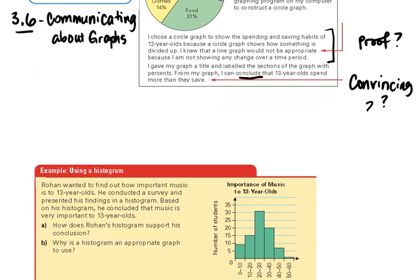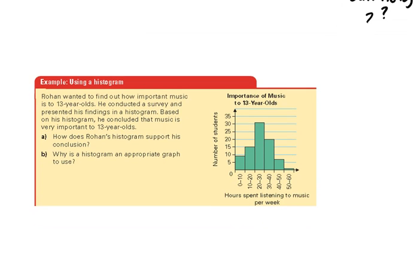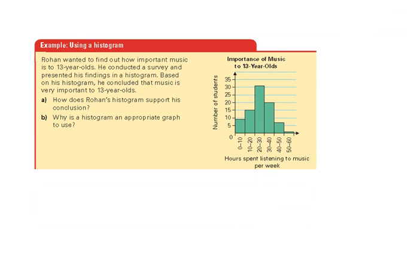In the second example, Rohan wants to find out how important music is to 13-year-olds. He conducts a survey and presents his findings in a histogram, concluding that music is very important to 13-year-olds. Let's look at the communication checklist. He used a histogram, which is the most appropriate because he can use intervals and find the frequency in each interval.